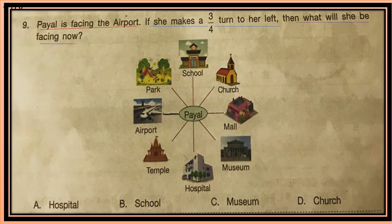Question 9: Pile is facing the airport. If she makes a 3/4 turn to her left, then what will she be facing? Right now Pile is facing the airport; from there she makes a 3/4 turn to the left side — what will she be facing?